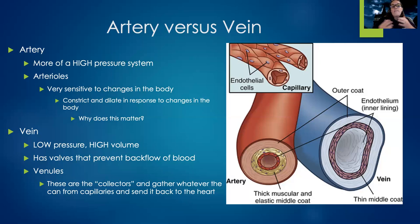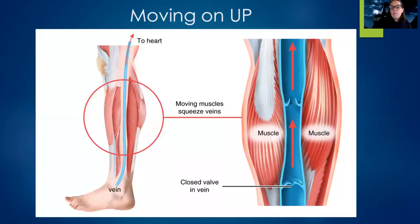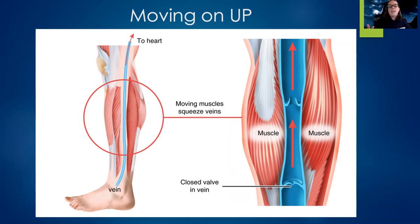Veins are a low-pressure system with a lot of volume. They're trying to get blood back to the heart and prevent it from going backwards. They're less reactive to outside stimuli — they're mainly a channel to return blood to the heart for re-oxygenation. Because veins are low pressure, the muscles in your legs do a lot of work to push blood back up to your heart against gravity. As we walk, leg muscles squeeze to keep blood flowing in the right direction. This will be very important when we talk about blood clots and venous disorders.